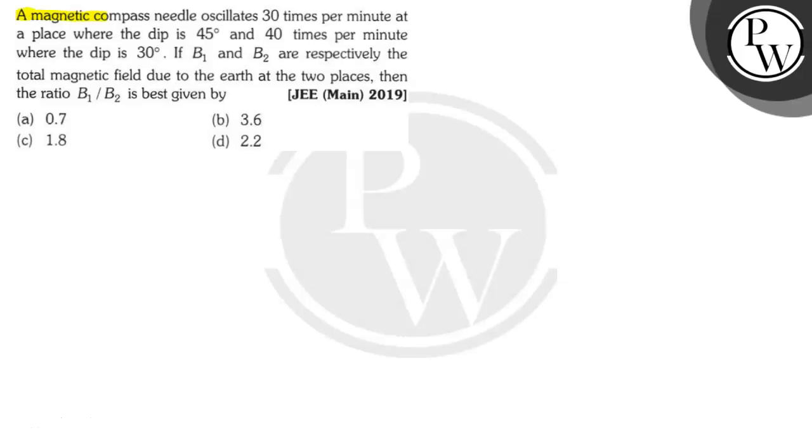A magnetic compass needle oscillates 30 times per minute at a place where the dip is 45 degrees and 40 times per minute where the dip is 30 degrees. If B1 and B2 are respectively the total magnetic field due to earth at the two places, then the ratio B1 by B2 is best given by?